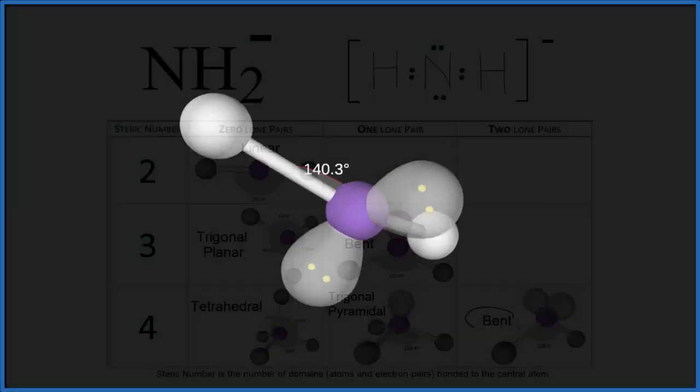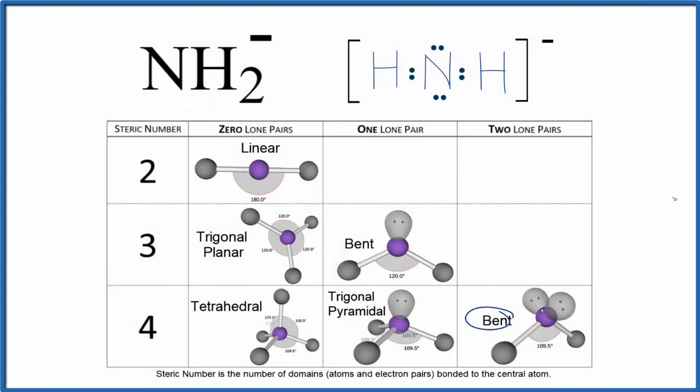Back to our Lewis structure. If you wanted to use the AXE notation for the molecular geometry, A is the central atom, which is the nitrogen. X is the number of atoms attached - we have two hydrogens. And E is the number of lone pairs. We have these two lone pairs here, so E would be 2. If you looked up AX2E2, you'd find that it's a bent molecular geometry.